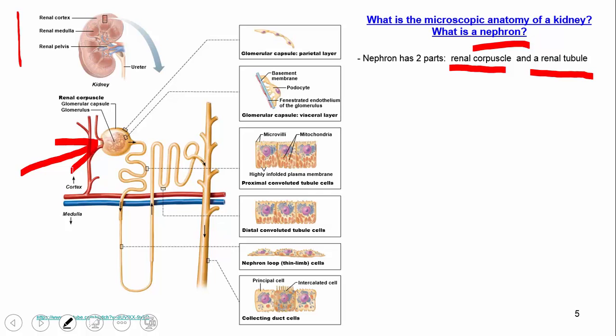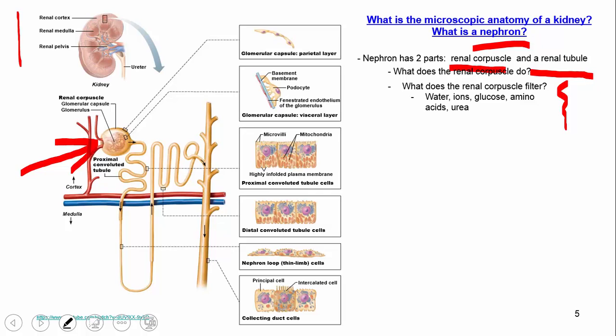Basically everything is taken out of the blood once it's in the glomerulus and put into Bowman's capsule — water, ions, glucose, amino acids, urea — pretty much everything is taken out. When it's taken out of the blood we call it the filtrate. Then slowly as we proceed down the nephron, things are going to be put back in.